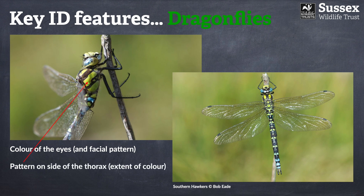Something perhaps a little more important is to look at the thorax — this is where the wings are attached. What you want to do is look at the colour and extent of the colour on the side of the thorax. In the example of this beautiful male Southern Hawker, he has these lovely green stripes which are really diagnostic. This feature varies enormously from species to species, and it is something you may even be able to see in flight, although you do have to hope the dragonfly flies quite slowly.